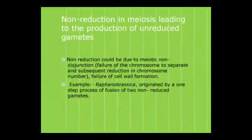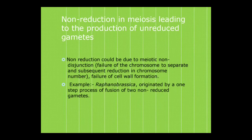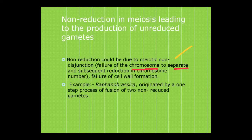Non-reduction in meiosis, leading to the production of unreduced gametes, is caused by meiotic non-disjunction. This involves the failure of chromosomes to separate and subsequent reduction in chromosome number. If chromosomes fail to separate, there will be a reduction in chromosome number, as well as failure of cell wall formation. For example, Raphano brassica originated by a one-step process of fusion of two non-reduced gametes.